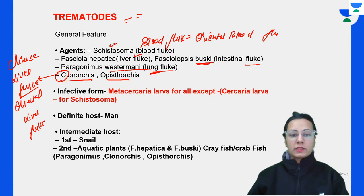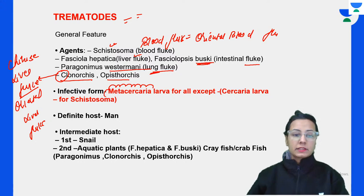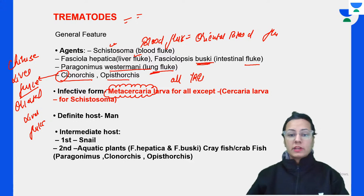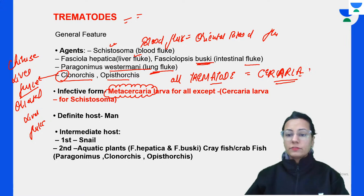The infective form - important to remember - is the metacercaria larva, which is infective for all trematodes. But there is one exception: the cercaria larva is the infective form in case of Schistosoma.